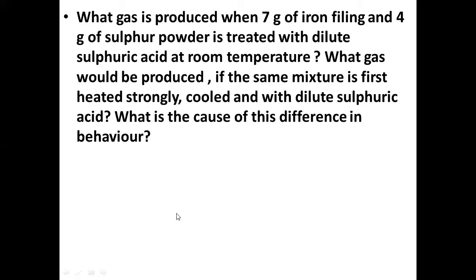Narendra Korvildi. What gas is produced when 7g of iron and 4g of sulphur is treated with dilute sulphuric acid? Hydrogen gas. And what gas will be produced if the same mixture is first heated strongly, then cooled, and then treated with dilute sulphuric acid?